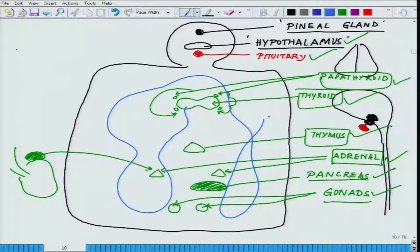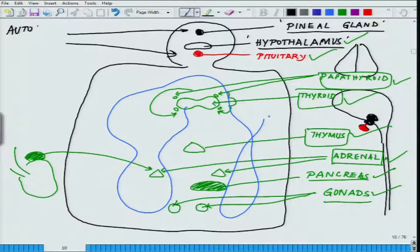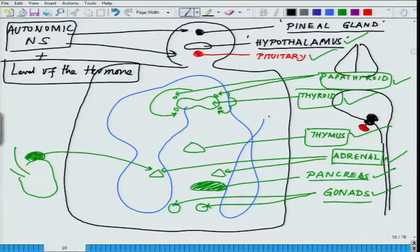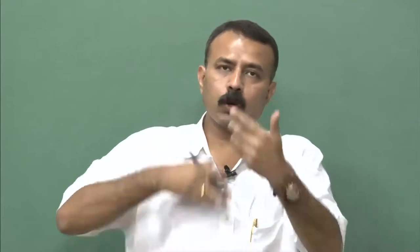Who are the systems controlling these different endocrine units? One major controller is the autonomic nervous system. A second controller is the level of the hormone itself — this is very important. If the level of a hormone exceeds certain limits that the body does not need, there is a negative feedback loop that says 'do not secrete more.' If the body needs 20 molecules and production exceeds 20, there is an auto-inhibitory effect that shuts down further secretion.